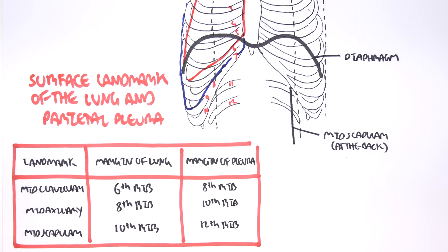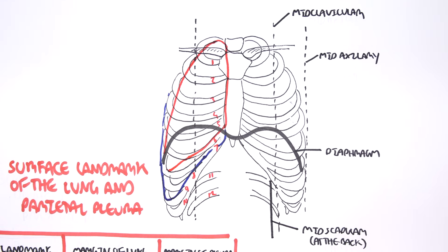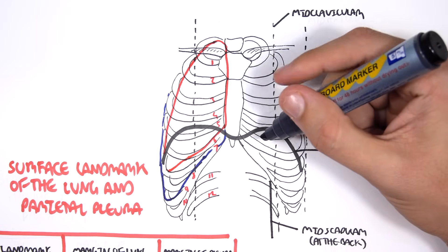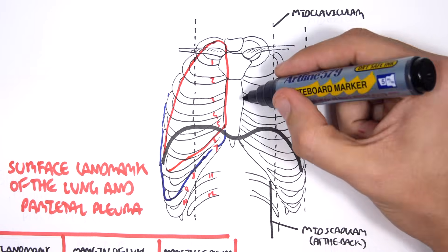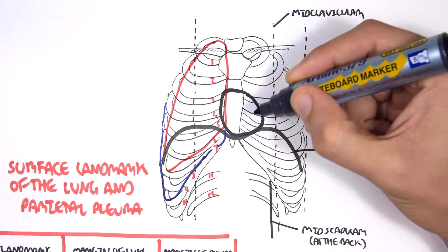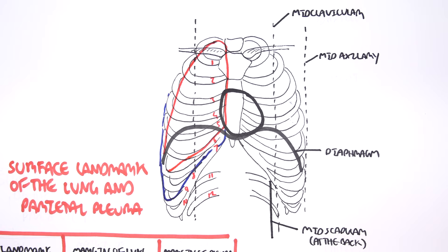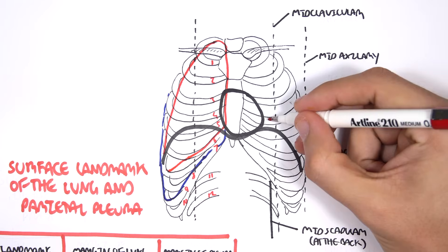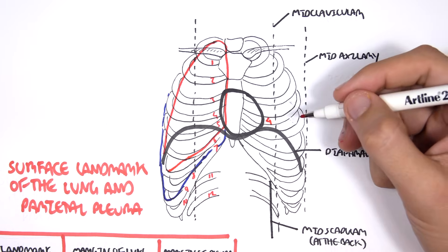Now the margins of the lung and pleura on the left side of the thorax is slightly different because of where the heart is situated. The heart sits somewhere here. Because remember, the aorta goes up and it's behind the sternal angle. Again, here in red, I'm drawing the margins of the lung.